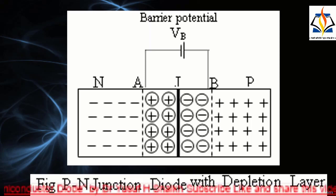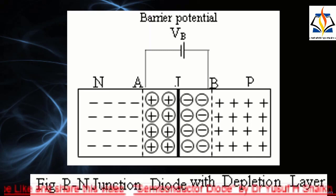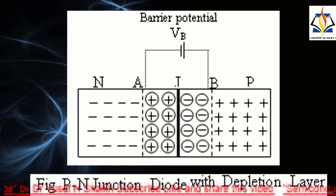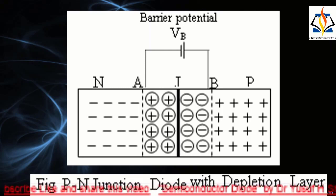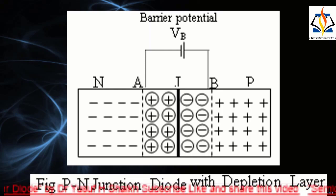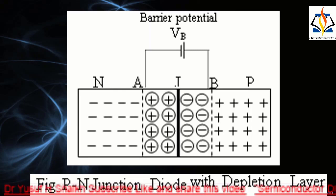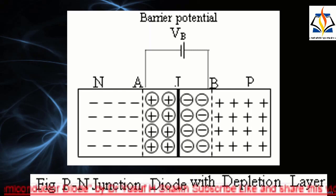This difference of potential across the junction is due to the oppositely charged fixed rows of ions on its two sides. It is called the junction potential, or potential barrier, or potential hill. It prevents the free electrons and holes from moving across the junction. At room temperature, the barrier potential is approximately 0.3 V for germanium and 0.7 V for silicon.